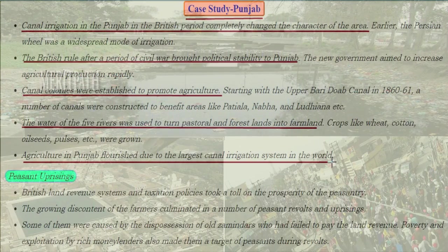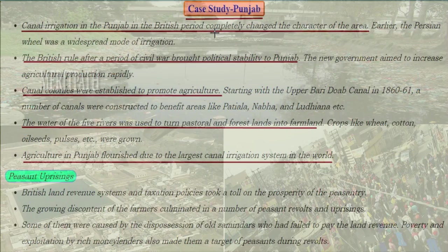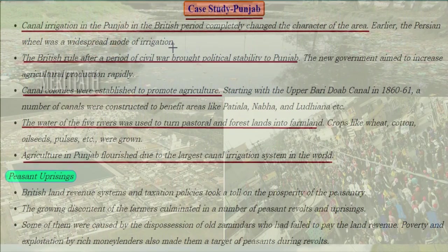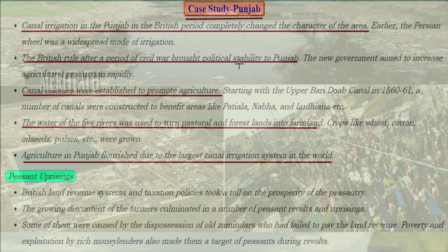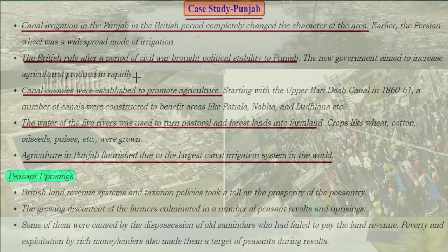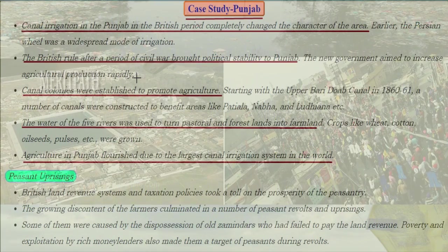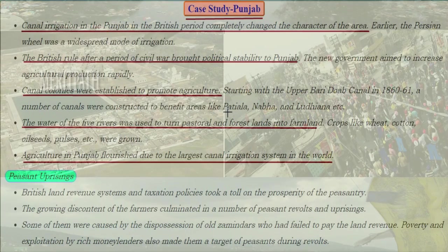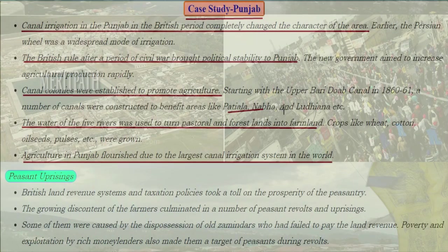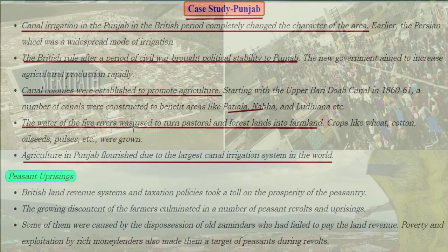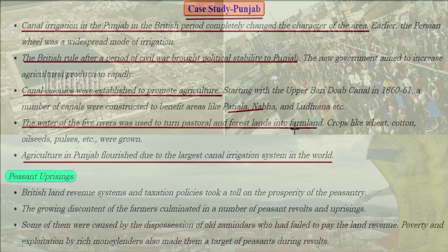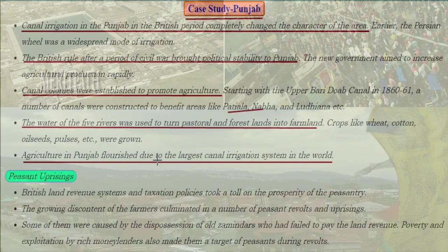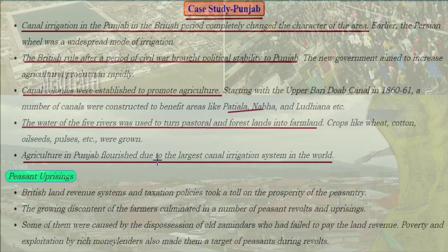Case study: canal irrigation in Punjab. During the British period, it completely changed the character of the area. Earlier, the Persian wheel was a widespread mode of irrigation. After a period of civil war, British rule brought political stability to Punjab, and the new government aimed to rapidly increase agricultural production. Canal colonies were established, starting with the Upper Bari Doab Canal in 1860–61. A number of canals were constructed to benefit areas like Patiala, Nabha, and Ludhiana. The water of the five rivers was used to turn pastoral and forest lands into farmlands. Crops like wheat, cotton, oilseeds and pulses were grown. Agriculture in Punjab flourished due to the largest canal irrigation system in the world.